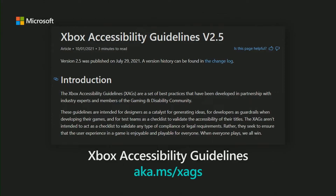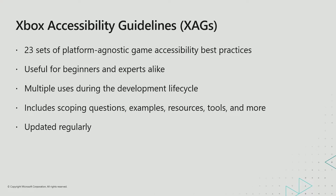Those can be found at aka.ms/xags. The XAGs are 23 sets of publicly available, platform-agnostic game accessibility best practices developed in partnership with industry experts and members of the gaming and disability community. They were released in January of 2020 and revised one year later based on additional feedback and learnings from game developers and gamers with disabilities. Useful for beginners and experts alike, these guidelines are intended for designers as a catalyst for generating ideas, for developers as guardrails when developing their games, and for test teams as a checklist to validate the accessibility of their titles.